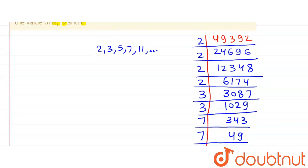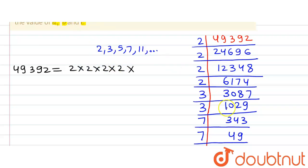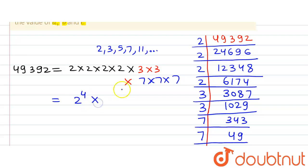We can now write 49,392 as a product of its prime factors: 2 appears four times, 3 appears two times, and 7 appears three times. So 49,392 = 2⁴ × 3² × 7³.